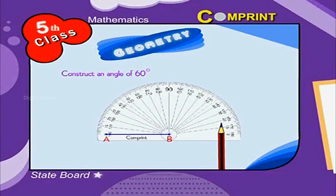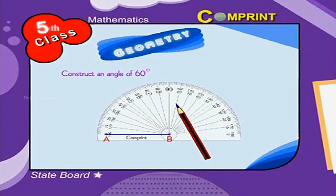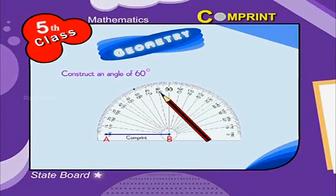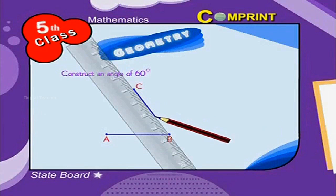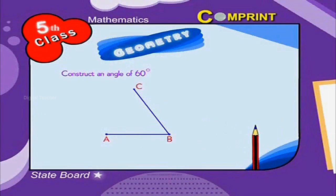Choose the scale which has 0 degree on the left side of the center and mark C at 60 degrees. Now remove the protractor and join B and C. Now we get angle ABC is equal to 60 degrees.